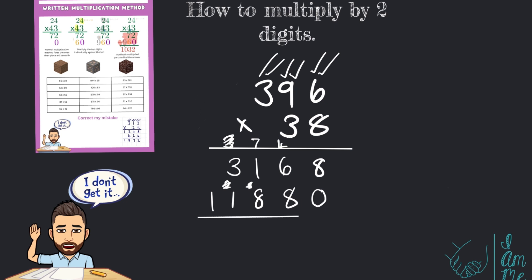Now to draw a line underneath and I'm going to add to find the total product. Starting with 8 add 0, 8. 6 add 8, 14. Carry the 1. 1 add 8 add 1, 10. Carry the 1. 3 add 1 add 1, 5. And finally 1. Give me an answer of 15,048.